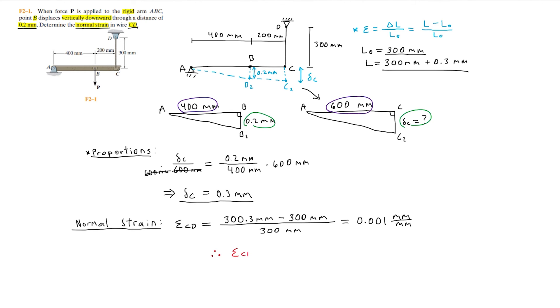Hence the normal strain in wire CD is simply 0.001.